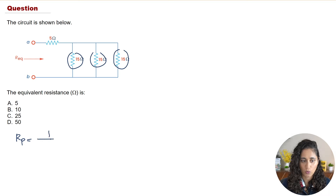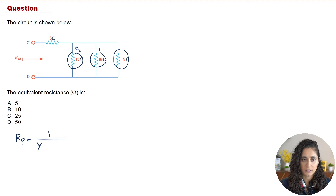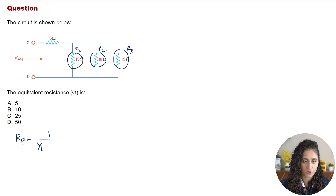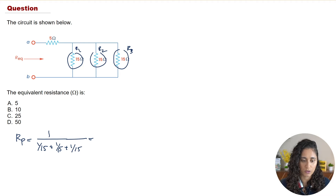Since they're in parallel, we use: Rp = 1 / (1/R1 + 1/R2 + 1/R3). Let's call them R1, R2, and R3 — although they're all the same value. So we calculate 1 / (1/15 + 1/15 + 1/15).